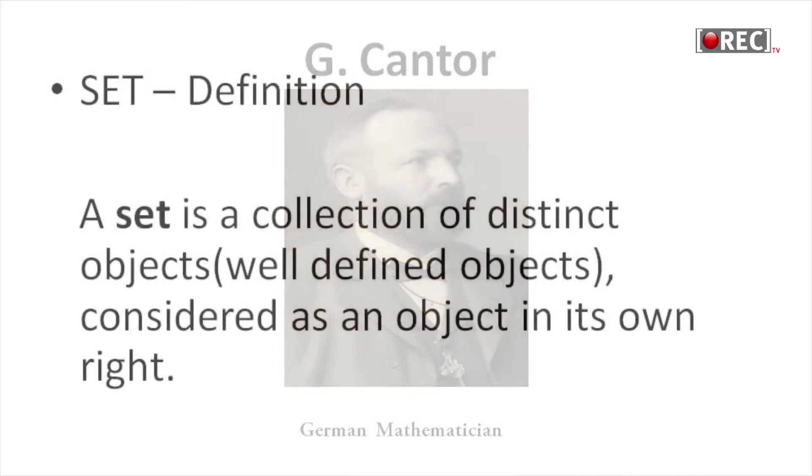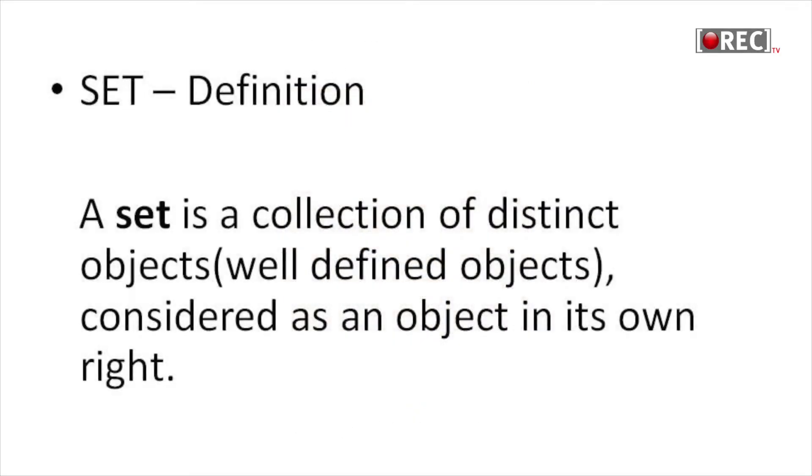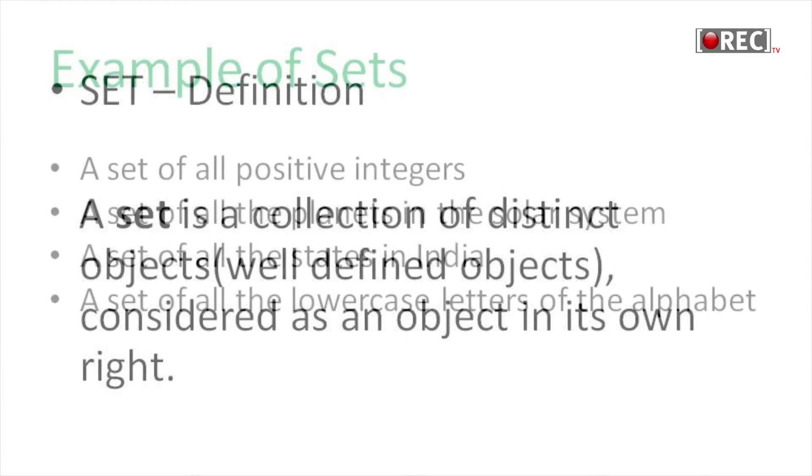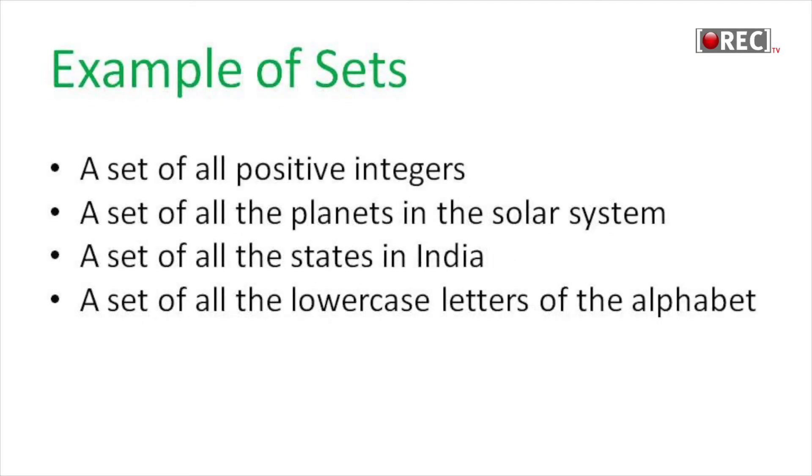Set definition: A set is a collection of distinct, well-defined objects considered as an object in its own right. A set can be written explicitly by listing its elements using set brackets. If the order of elements is changed or any element is repeated, it does not make any changes in the set. Some examples: a set of all positive integers, a set of all planets in the solar system, and a set of all states in India.